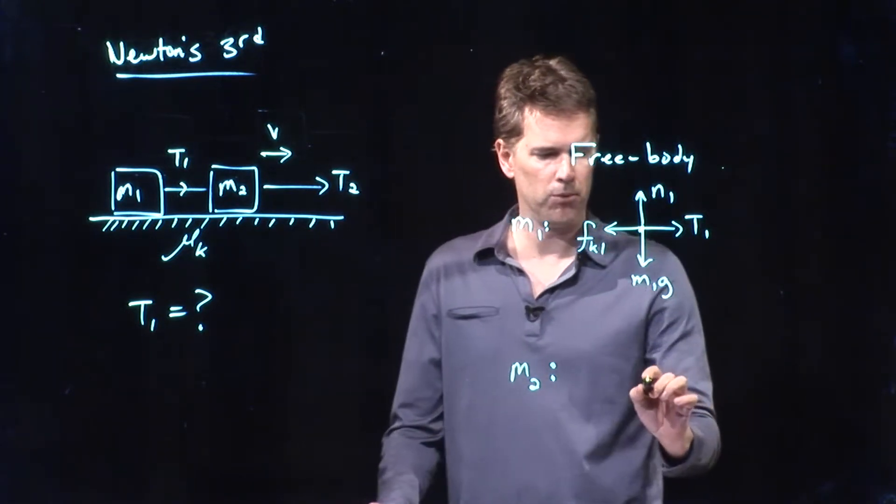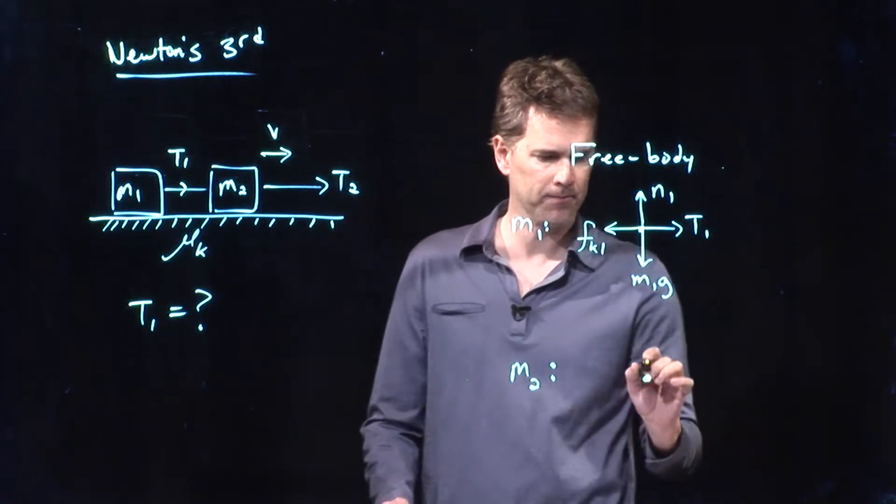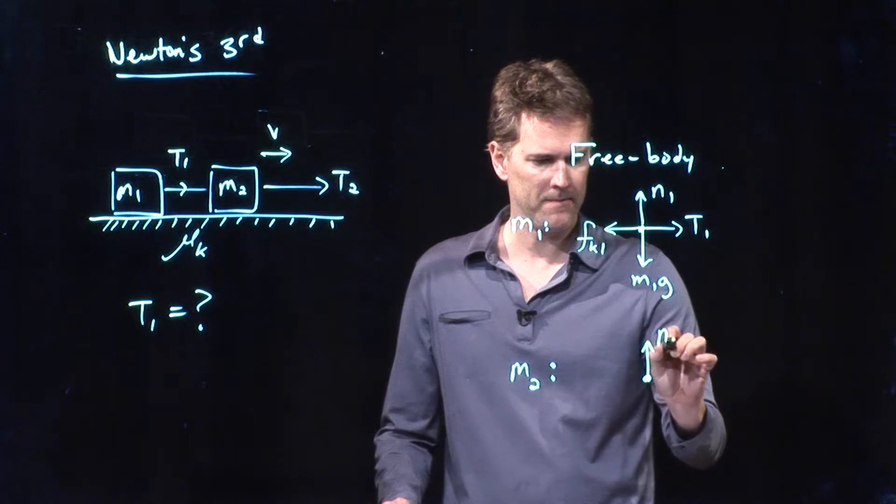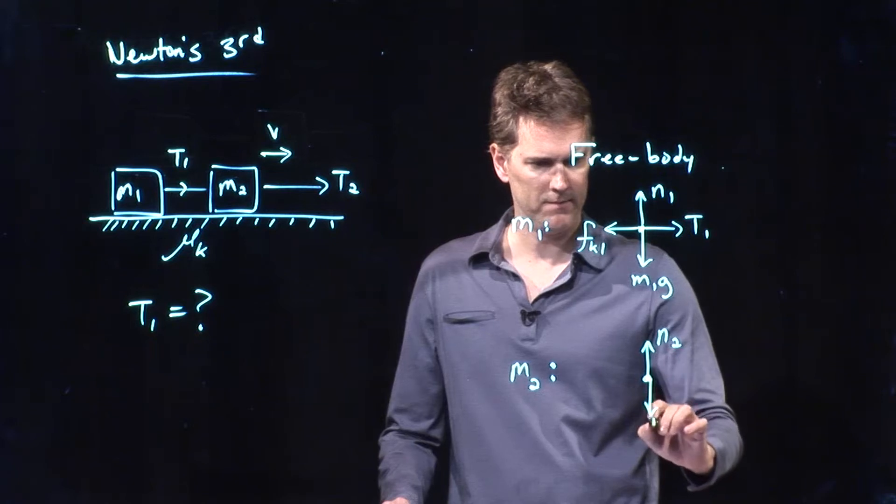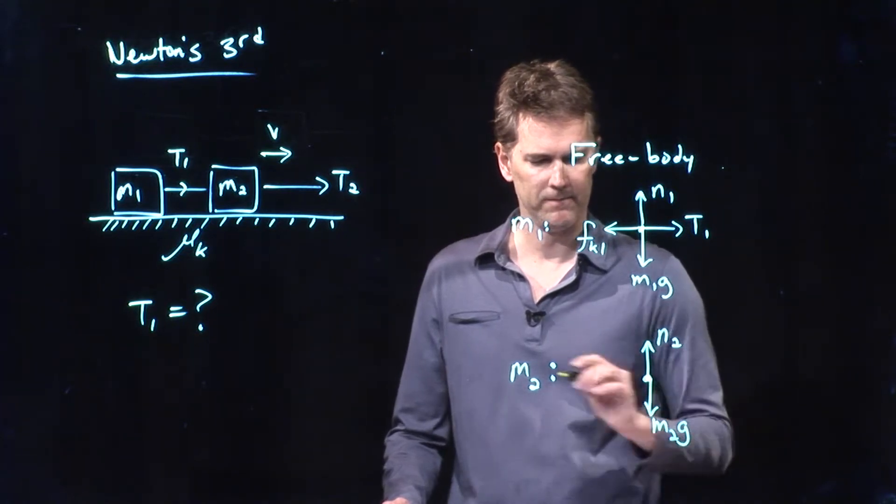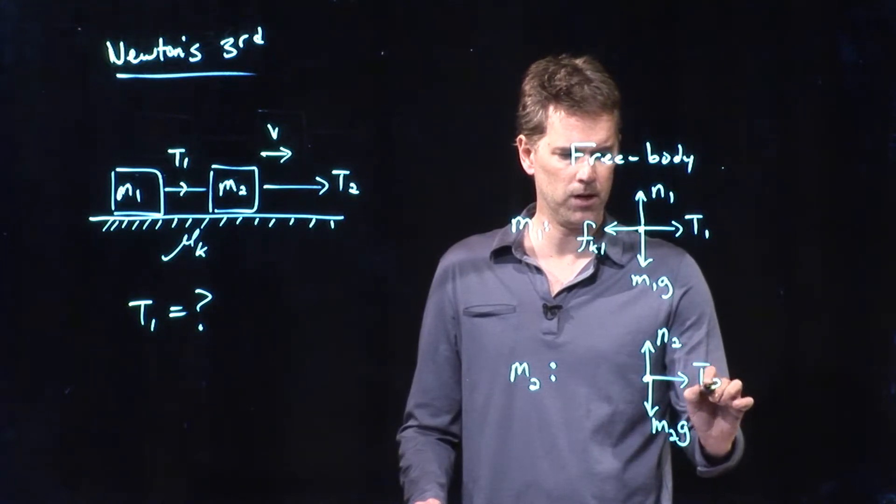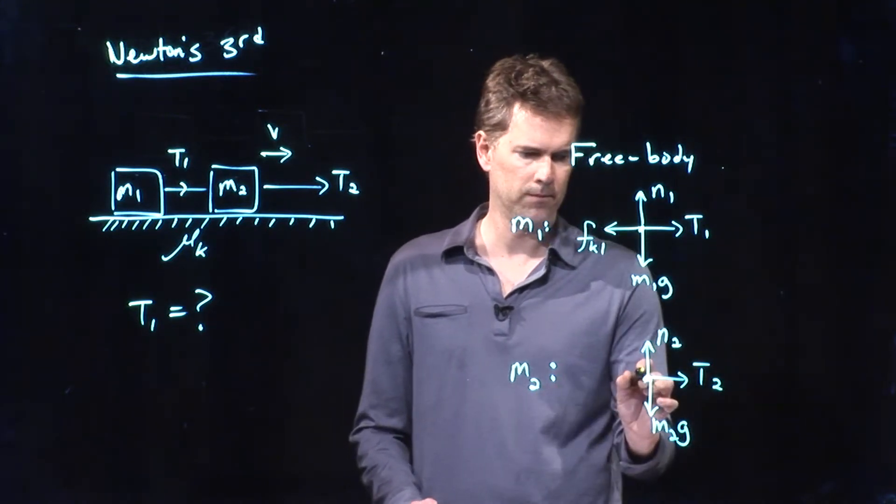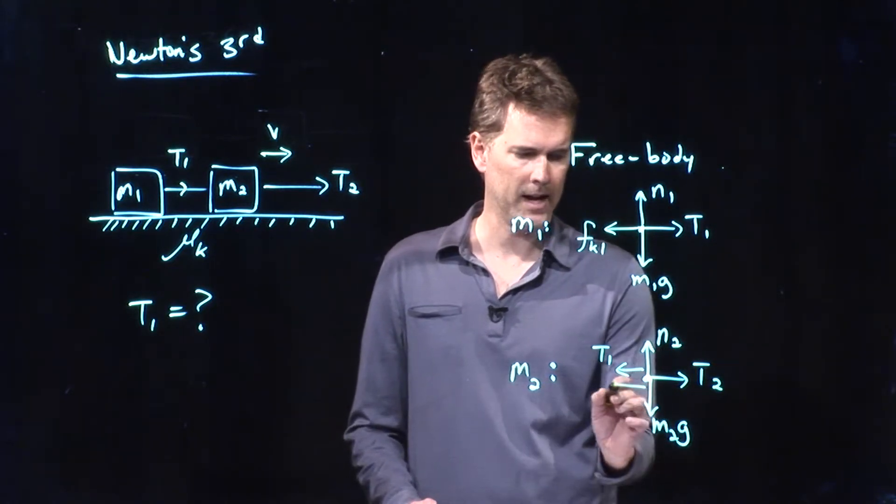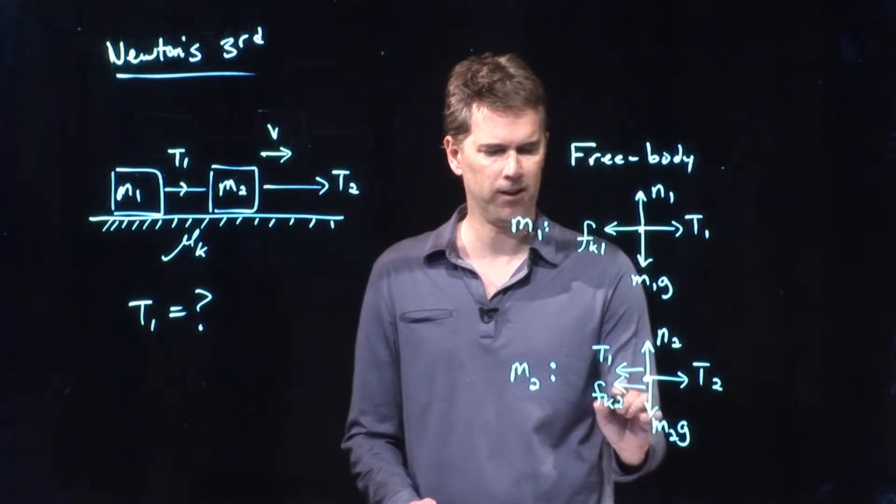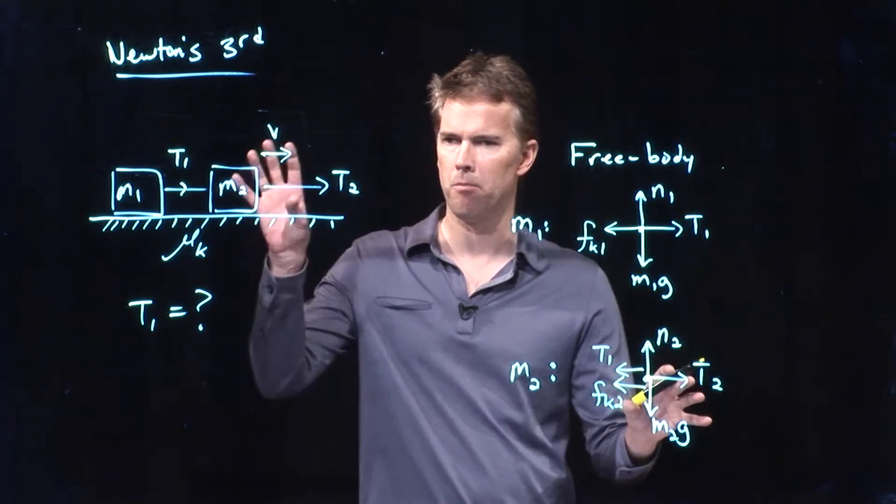M2. Brandon, what do you think I should draw for M2? Normal force going up. Gravity going down. What else? Tension 2 going to your right. Tension 1 going to the left. And kinetic friction going to the left. And we'll call that one FK2. Perfect. That's the free body diagram for mass 2.